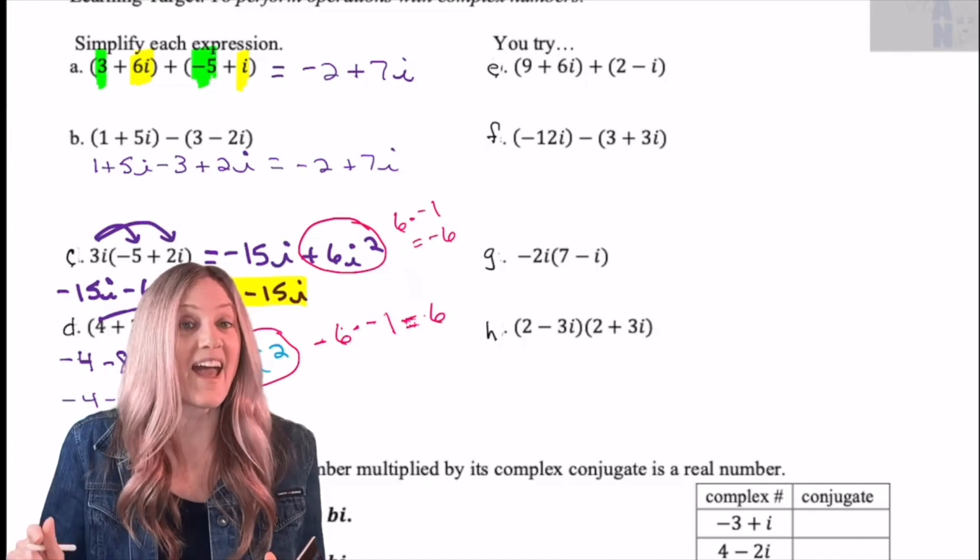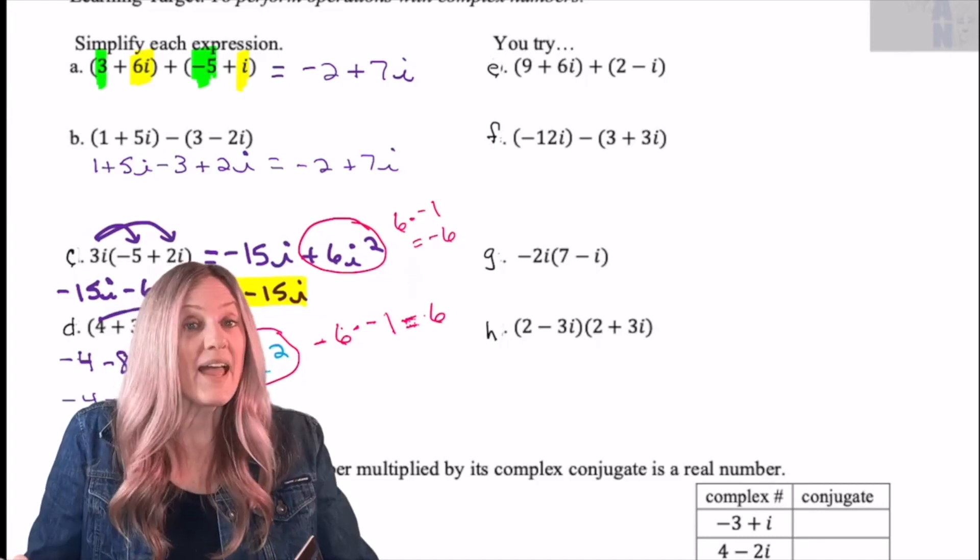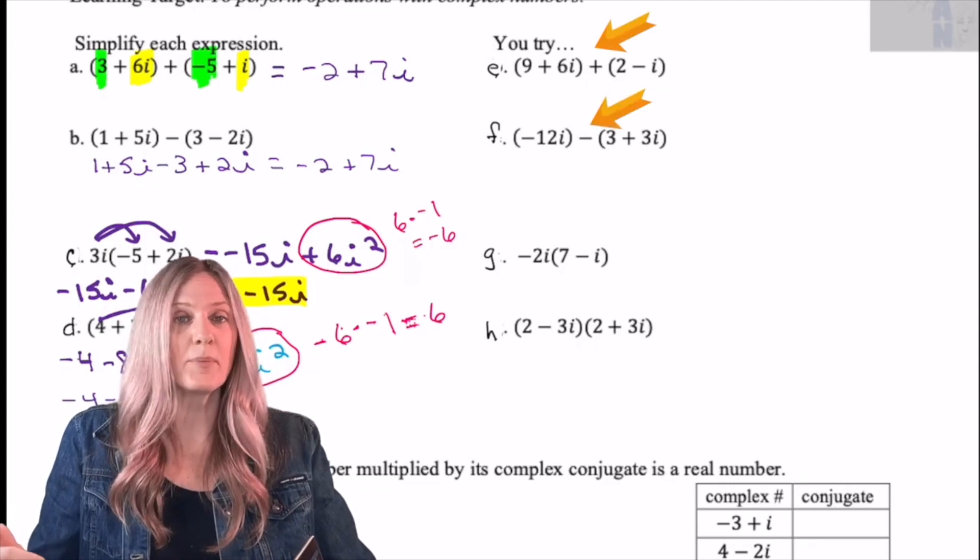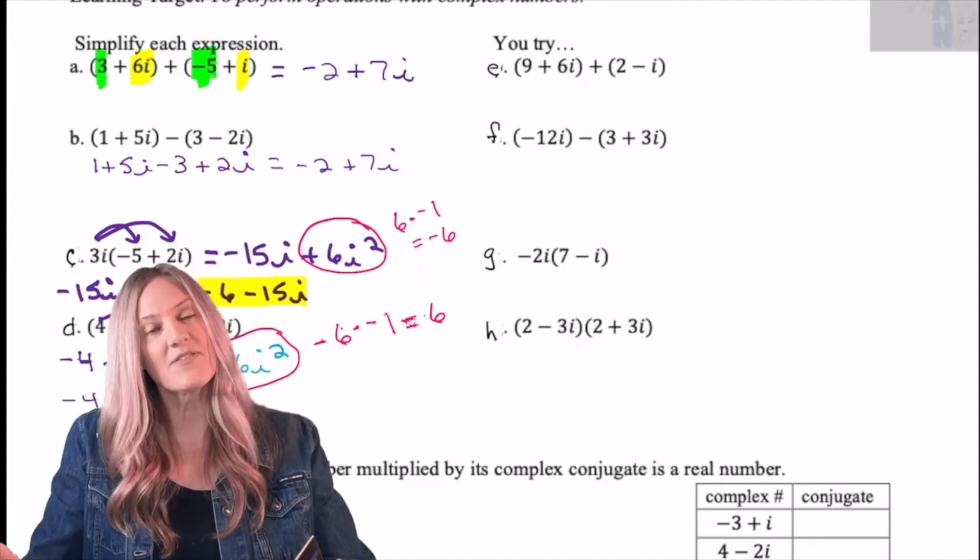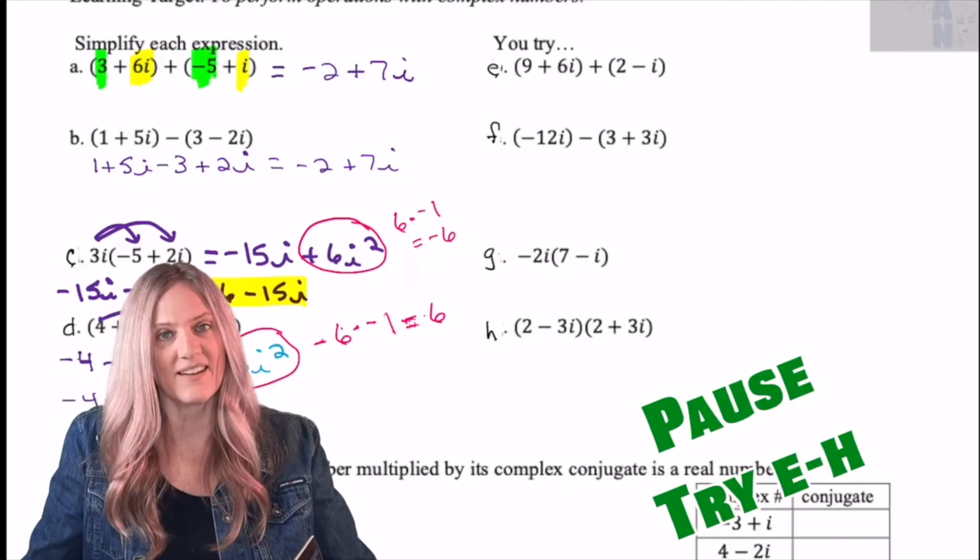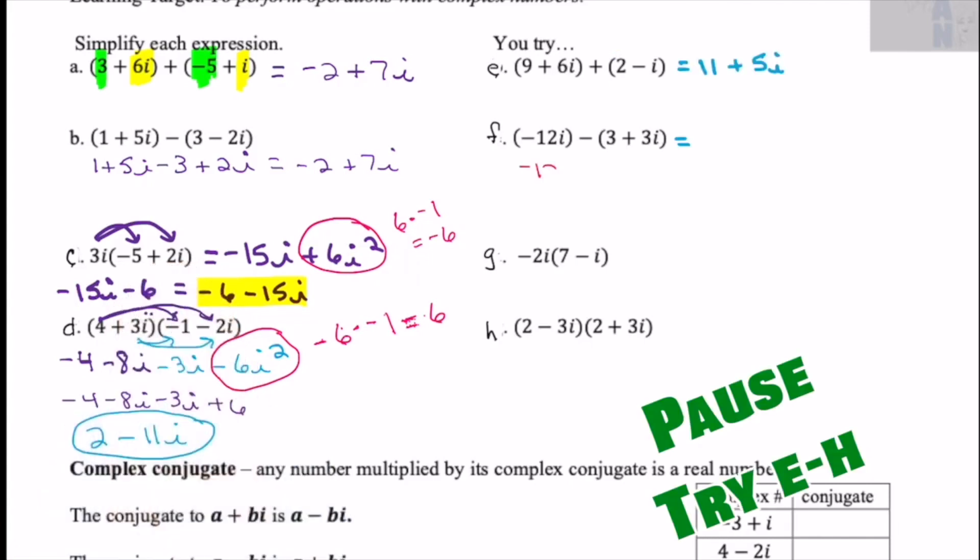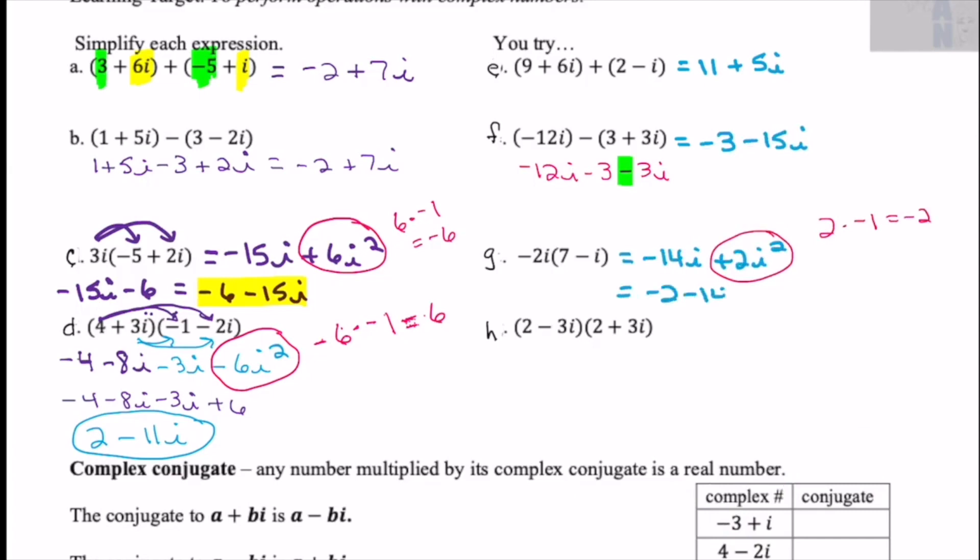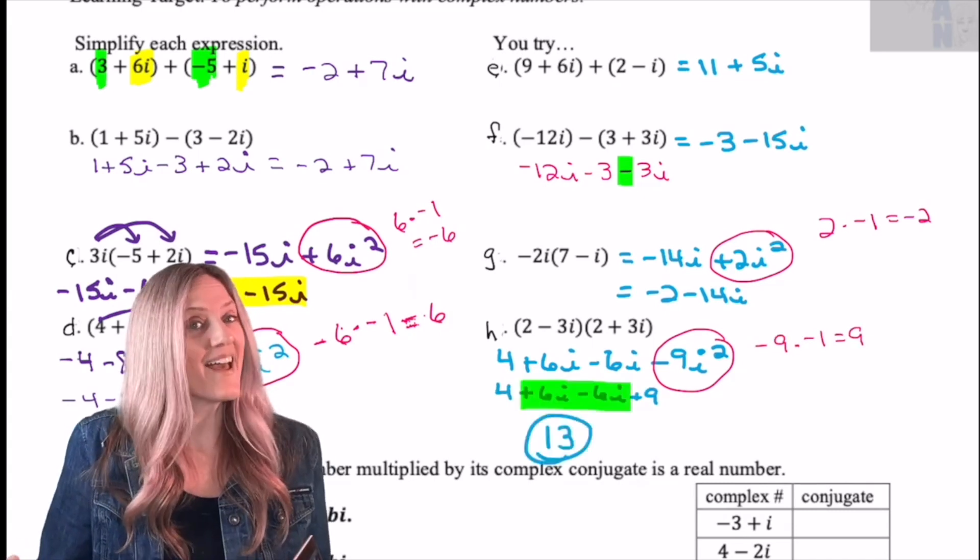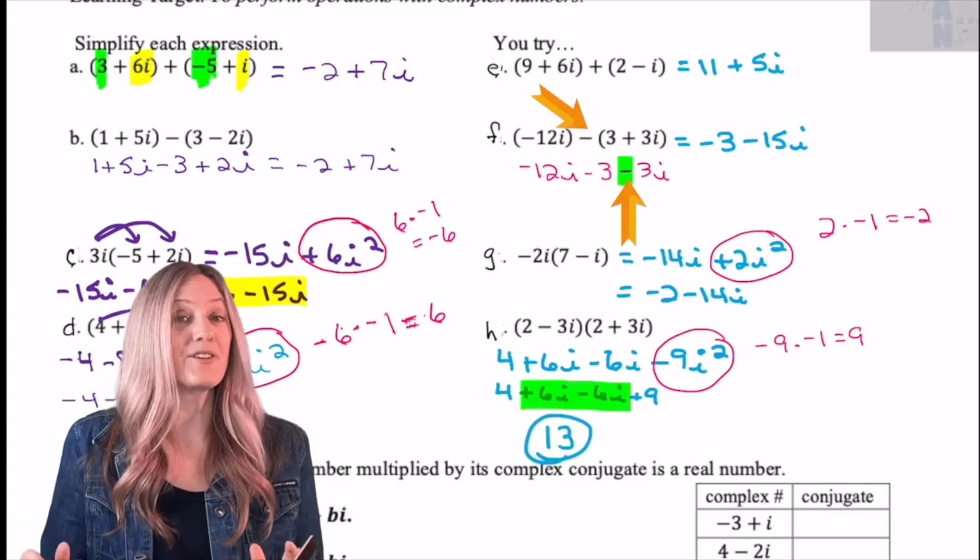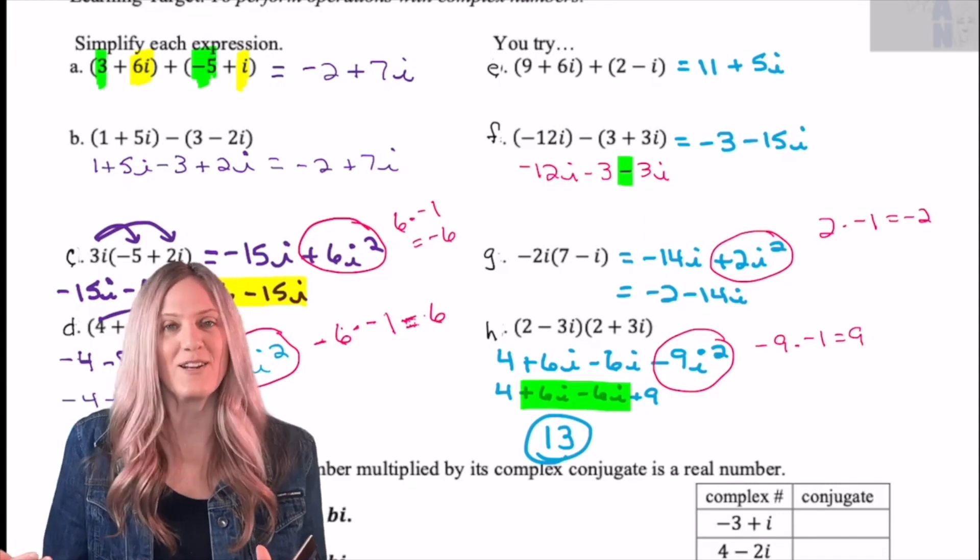Now you get to try. Add, subtract, and multiply complex numbers. Pay careful attention to whether or not there is an operation between the sets of parentheses. If there is, then we're not multiplying. Check your work. Make sure on F that you distributed that minus sign and have the correct final answer and check your final form on each of them.